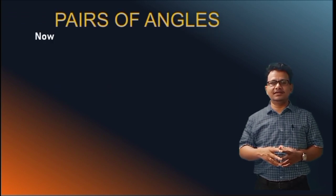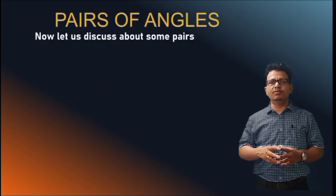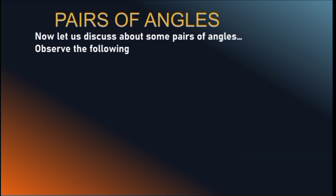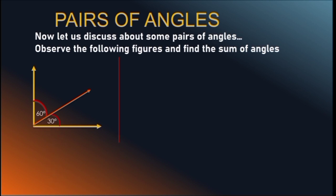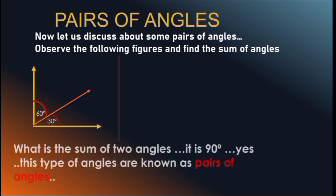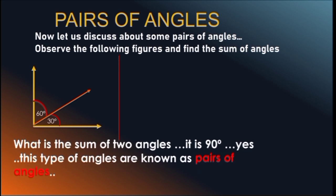Now let us look at Pairs of Angles and discuss some of them. Observe the following figures and find the sum of angles. Look at the figure — here it is making 60 degrees and here 30 degrees. What is the sum of these 2 angles? It is 90 degrees. Yes, this type of angles are known as Pairs of Angles.